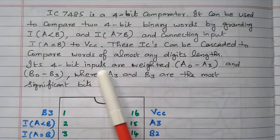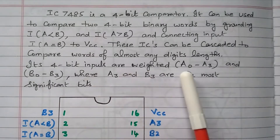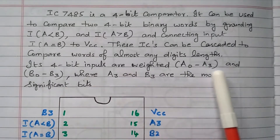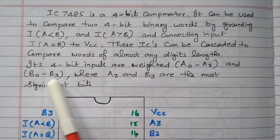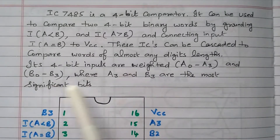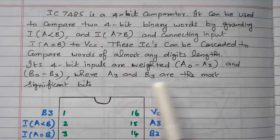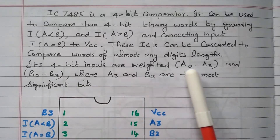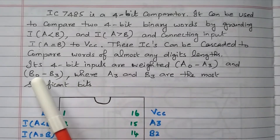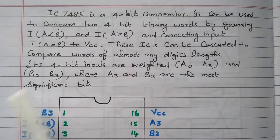If the four inputs are weighted, that is A0 to A3 and B0 to B3, where A3 and B3 are the most significant bit (MSB) and A0 and B0 are the least significant bit (LSB).